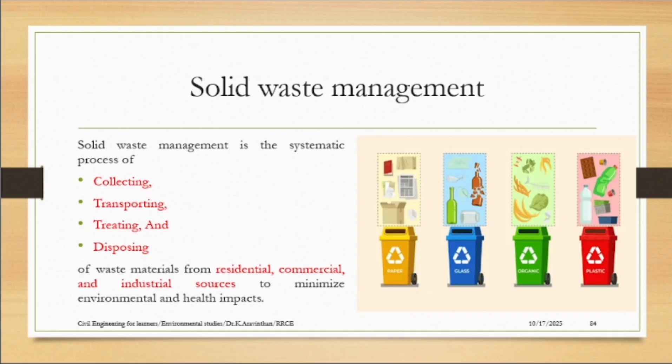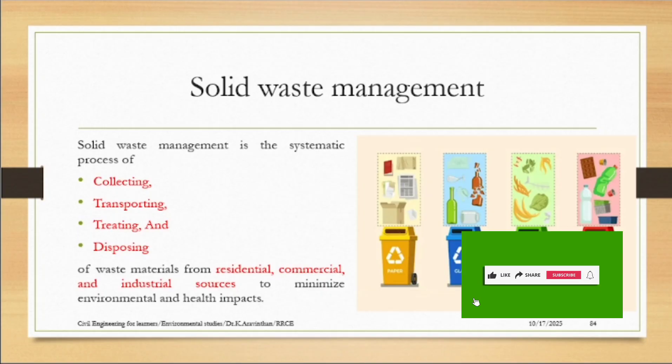Solid waste management is a process. It starts from 1 and ends at 5 — there are 5 processes. It is a systematic process of collecting, transporting, treating, and disposing, and all these processes have to be done in a systematic way. Solid waste can come from residential, commercial, industrial sources, and more.